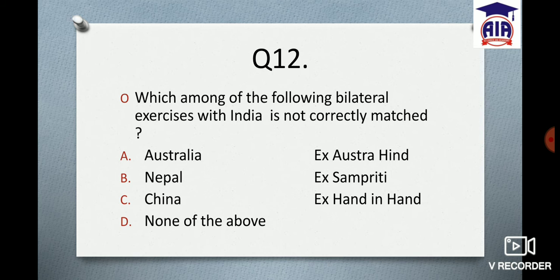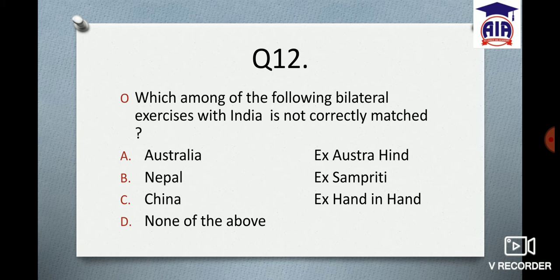Question number 12: Which among the following bilateral exercises with India is NOT correctly matched? Option A: India–Australia — Exercise Austra-Hind. Option B: India–Nepal — Exercise (name given). Option C: India–China — Exercise Hand-in-Hand. Option D: None of the above. You need to know the correct matches; this topic is easy once covered.